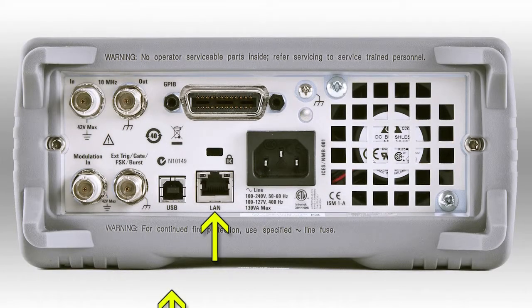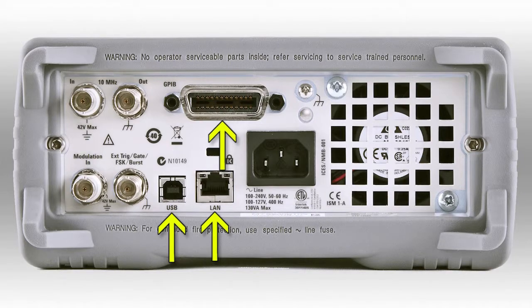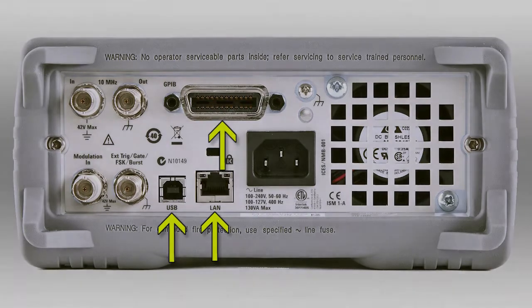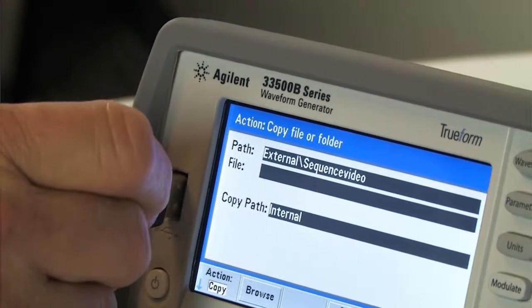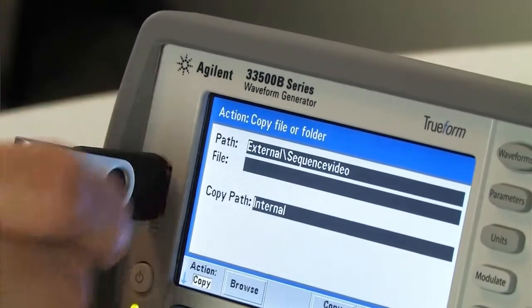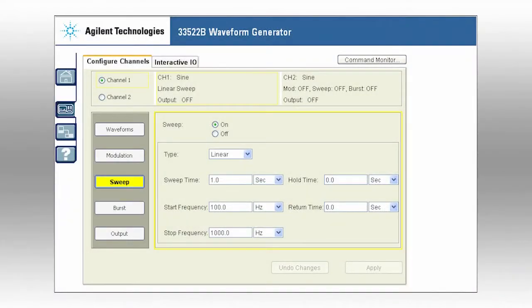Built-in LAN, USB, and GPIB make it easy to connect to the 33500B series. The USB port on the front can be used for uploading and downloading instrument setups and arbitrary waveforms. These generators are LXI-C compliant and include a built-in web server, making it easy to control the instruments.